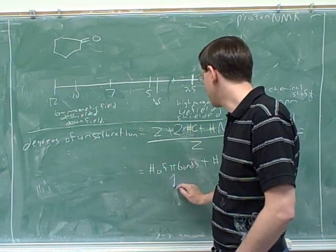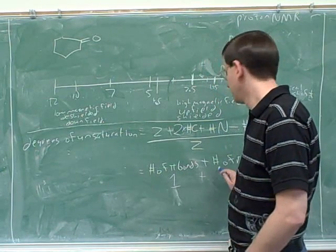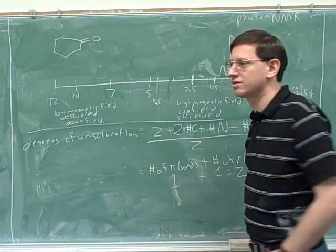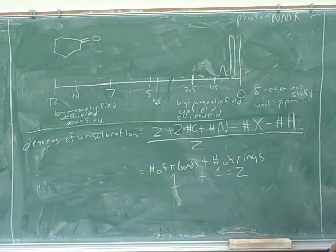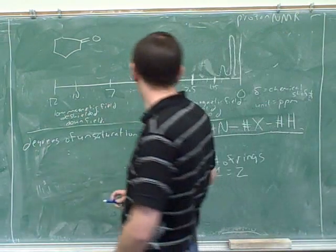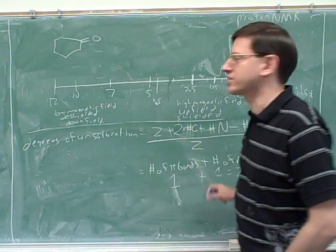I mean one, but... And how many rings? One, but let's say you were just going to figure it out by the formula. Oh, yeah. Well, so first of all you would get two degrees of unsaturation.